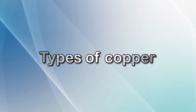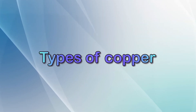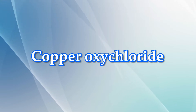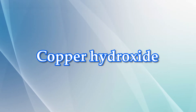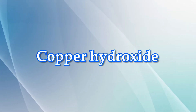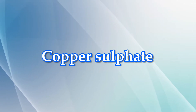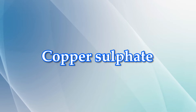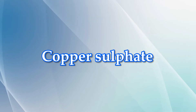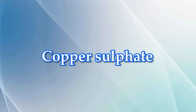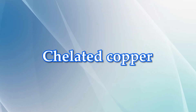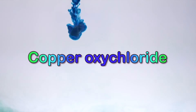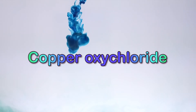The first and most commonly used type is copper oxychloride. The second type is copper hydroxide and the third type is copper sulfate. The fourth type is chelated copper. Let us now take a complete look at each type.